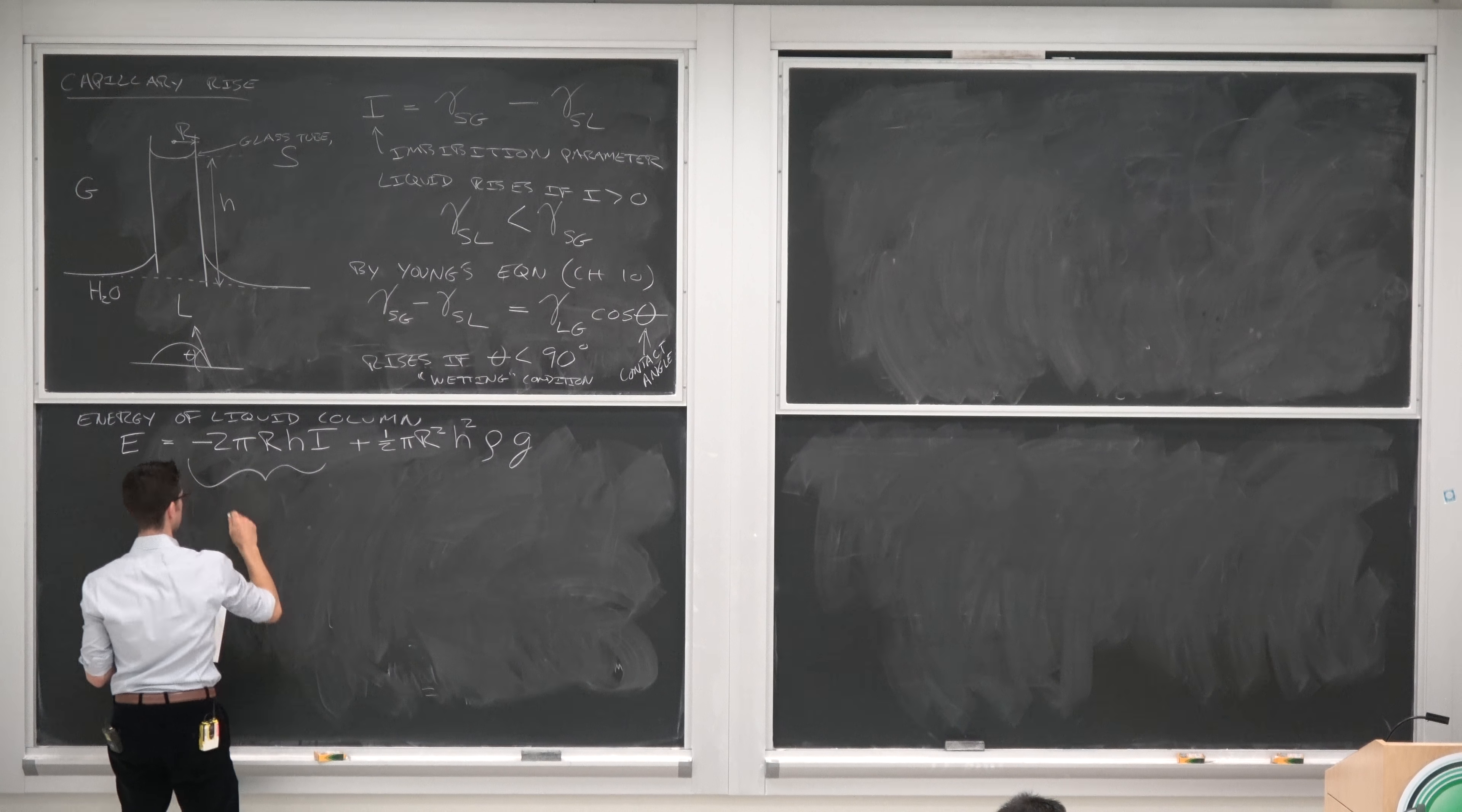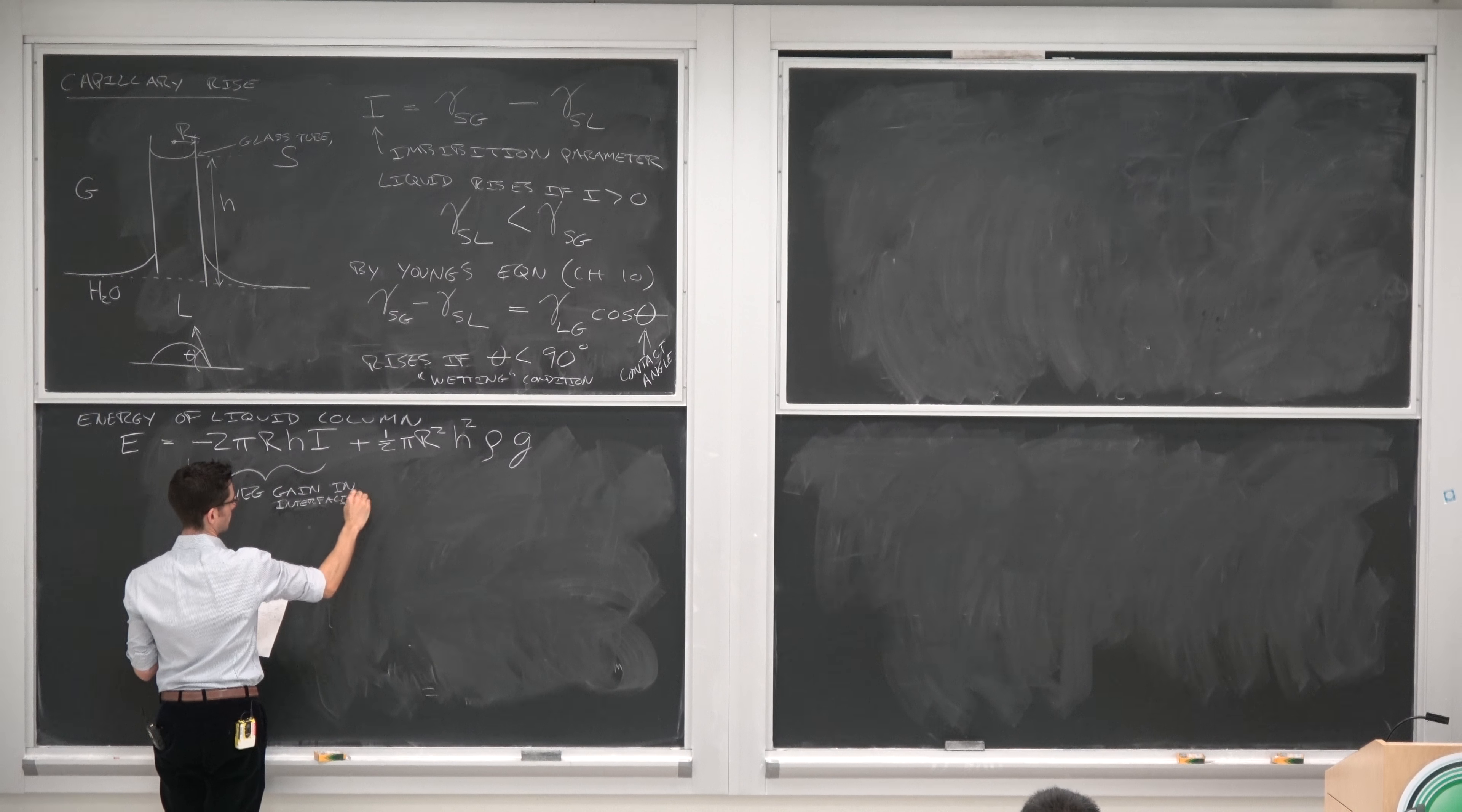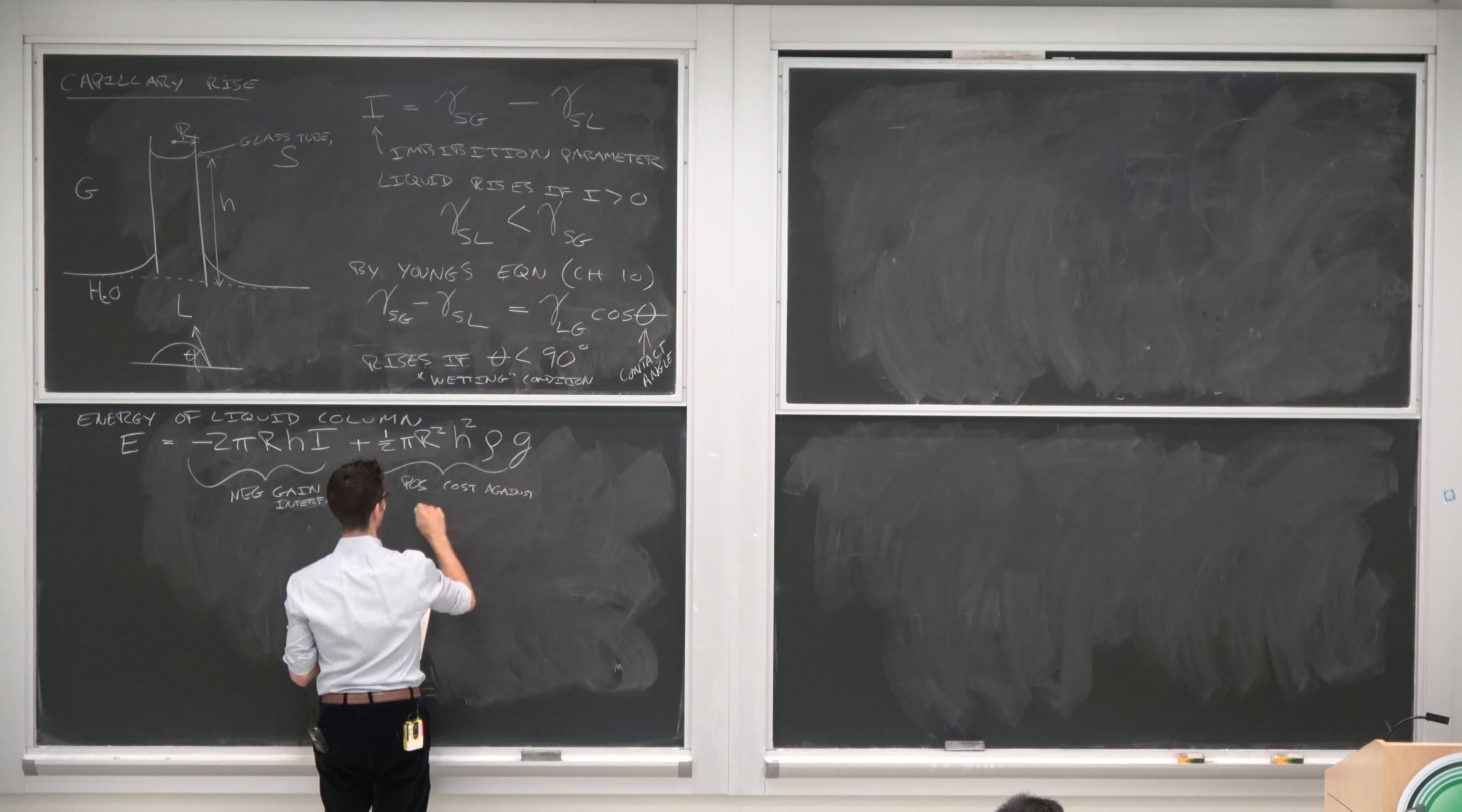I'll show where that comes from in a second. And this is the negative gain in surface energy. Let's say interfacial energy. And this is the positive cost against gravity.